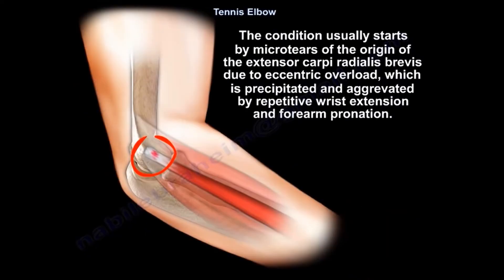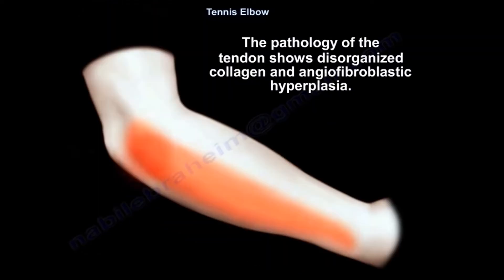The condition usually starts with micro tears at the origin of the extensor carpi radialis brevis due to eccentric overload, which is precipitated and aggravated by repetitive wrist extension and forearm pronation. The pathology of the tendon usually shows disorganized collagen and angiofibroplastic hyperplasia.